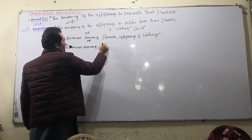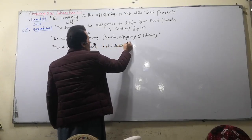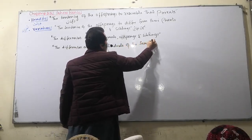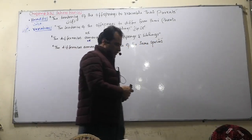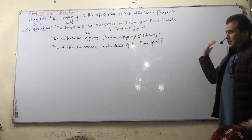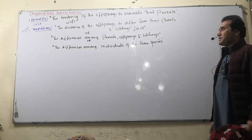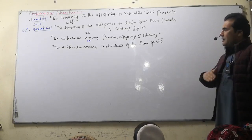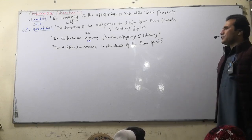Variation applies to individuals of the same species. As you see, ones who are the same species also have differences in skin colour, fingerprints, behaviour, and intelligence — they are all different from each other.